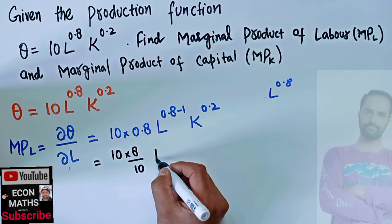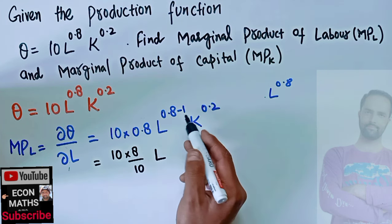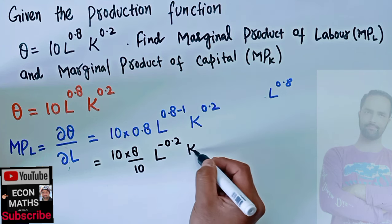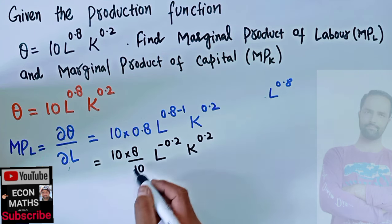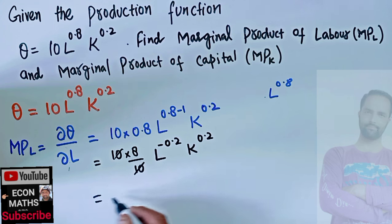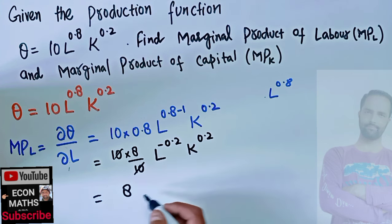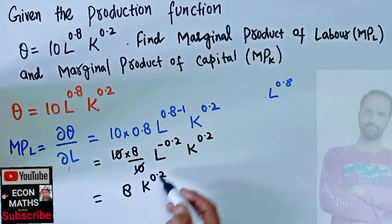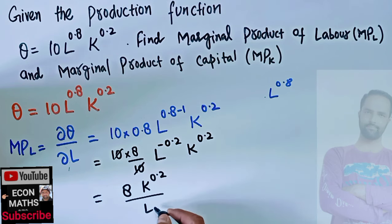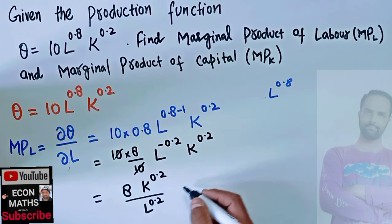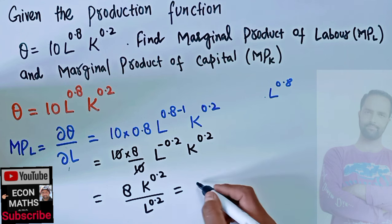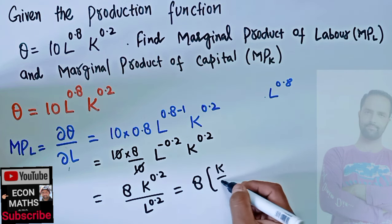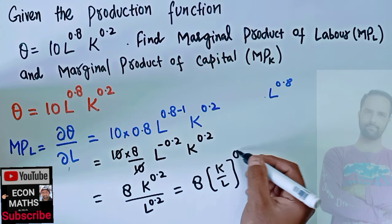We have L^(0.8−1) = L^(−0.2) and K^0.2. The 10s cancel, leaving 8 × K^0.2 × L^(−0.2). Transposing L^(−0.2) to the denominator changes the sign to positive, giving us the marginal product of labor = 8K / L^0.2.